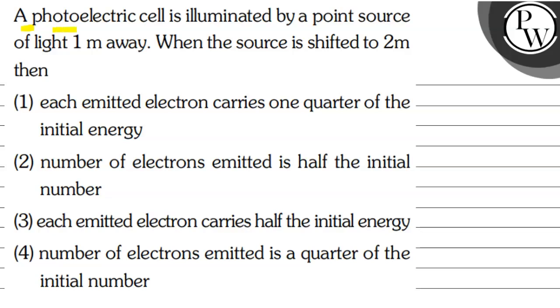The question says that a photoelectric cell is illuminated by a point source of light 1 meter away. When the source is shifted to 2 meter,